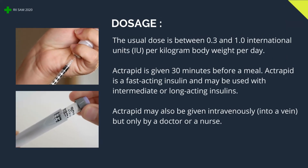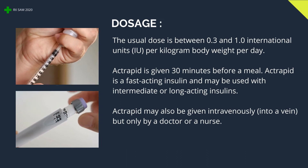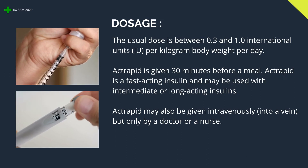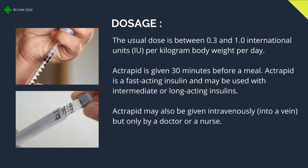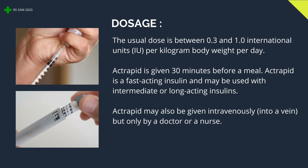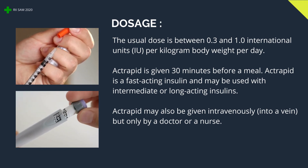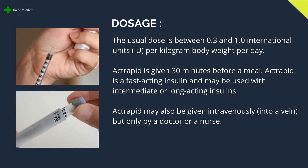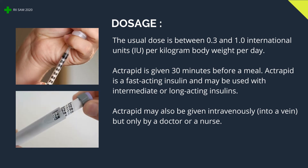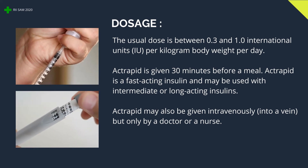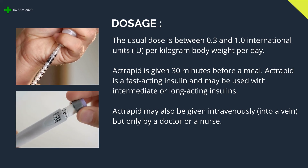Dosage: the usual dose is between 0.3 and 1.0 international units (IU) per kilogram body weight per day. At rapid is given 30 minutes before a meal. At rapid is a fast-acting insulin and may be used with intermediate or long-acting insulin. At rapid may also be given intravenously into a vein, but only by a doctor or a nurse.